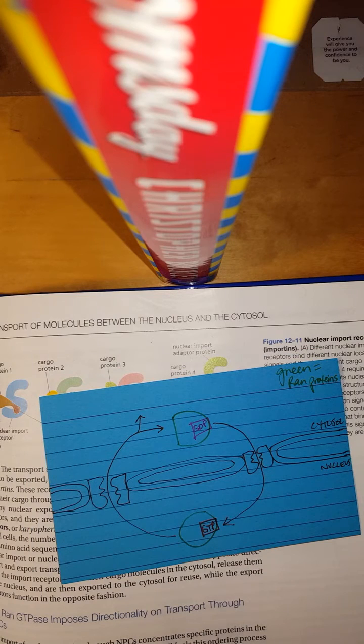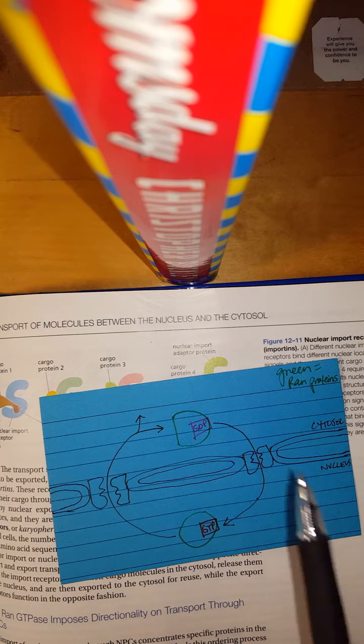Alright, so out here is the cytosol. And in here is the nucleus. We know that there's this cycle between RAN GDP and RAN GTP. And RAN is the GTPase. The green parts are the actual proteins.